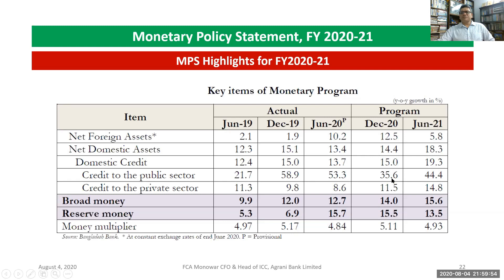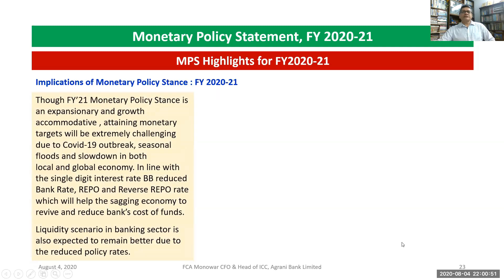Credit to the public sector: December 2020 projected 35.6%, June 2021 projected 44.4%. Credit to the private sector: June 2020 actual 8.6%, December 2020 projected 11.5%, June 2021 projected 14.8%. Broad money: June 2020 actual 12.7%, December 2020 projected 14%, June 2021 projected 15.6%. Reserve money: June 2020 actual 15.7%, December 2020 projected 15.5%, June 2021 projected 13.5%. Money multiplier: June 2020 actual 4.84, December 2020 projected 5.11, June 2021 projected 4.93.